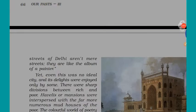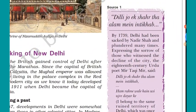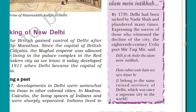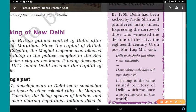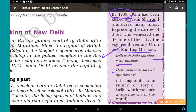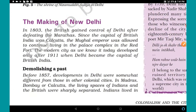By 1739, Delhi had been sacked by Nadir Shah. Expressing the sorrow of those who witnessed the decline of the city, the 18th century Urdu poet Mir Taki Mir wrote: 'Delhi jo ek shahar tha alam mein inti khyab, hum rahe hum rahene waale hain usi ujde dayaar ke' — meaning: 'I belong to the same ruined territory of Delhi, which was once a supreme city in the world.' These words were written after witnessing the destruction of Delhi by Nadir Shah in 1739.